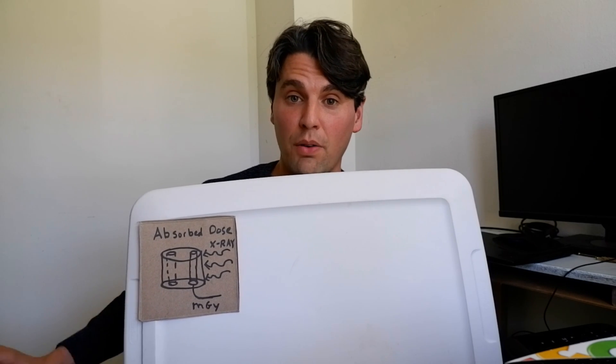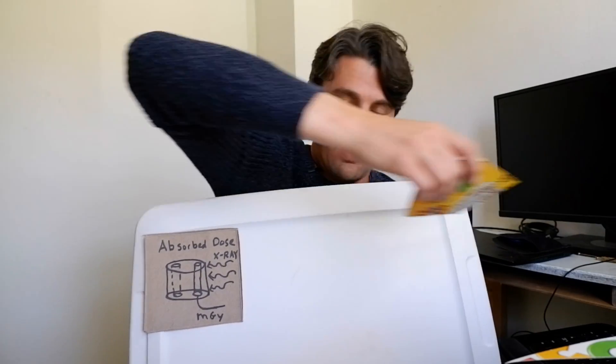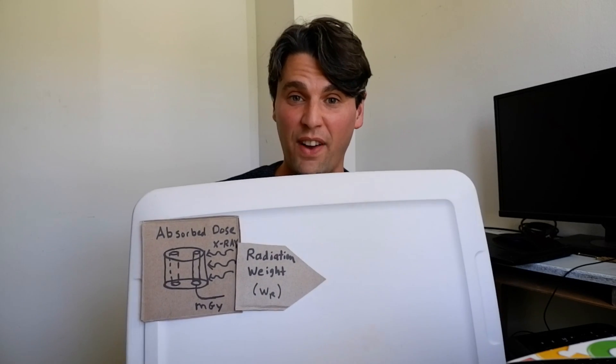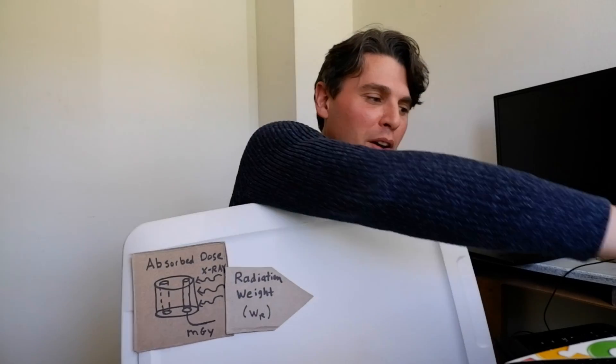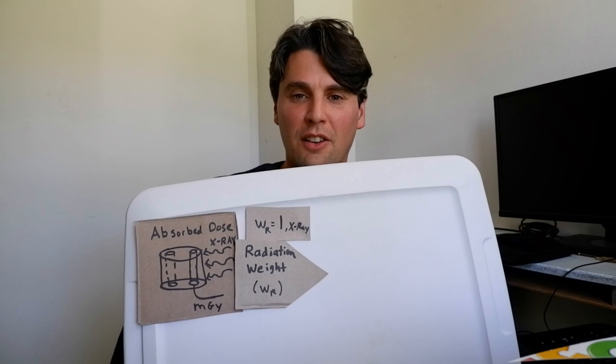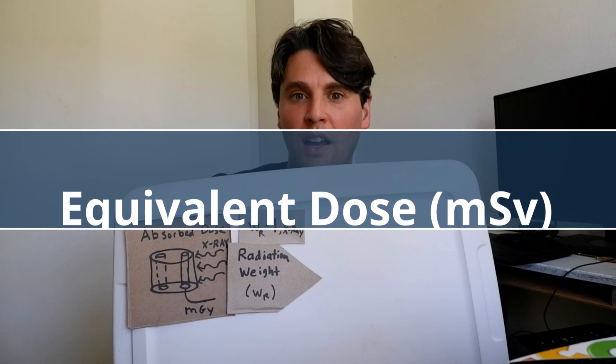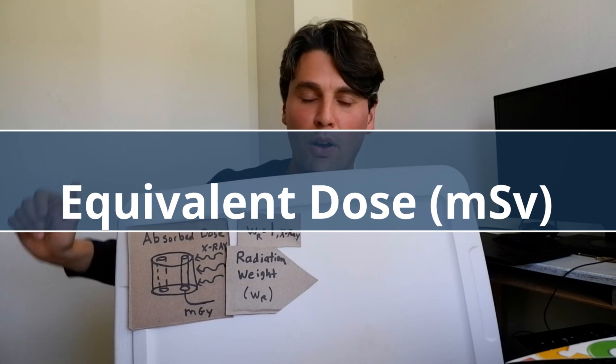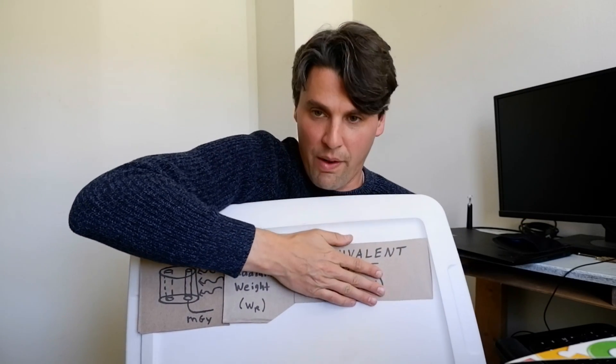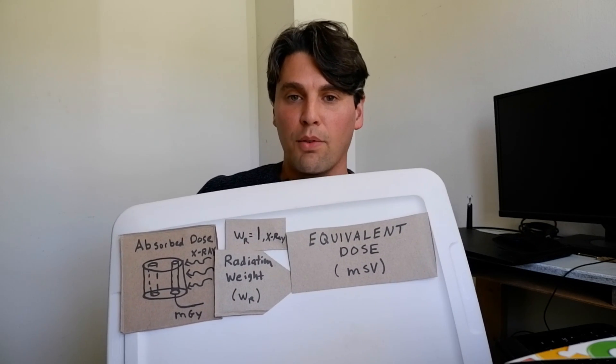We want to convert that to the equivalent dose. So what do we do? It's a super complicated procedure involving this fancy thing called a radiation weighting factor—super fancy. What we're doing is we're going to multiply by one. So it's actually very simple, guys. If you're in x-ray and CT imaging, the radiation weighting factor is just multiplying our absorbed dose by one, and that will give us our equivalent dose.